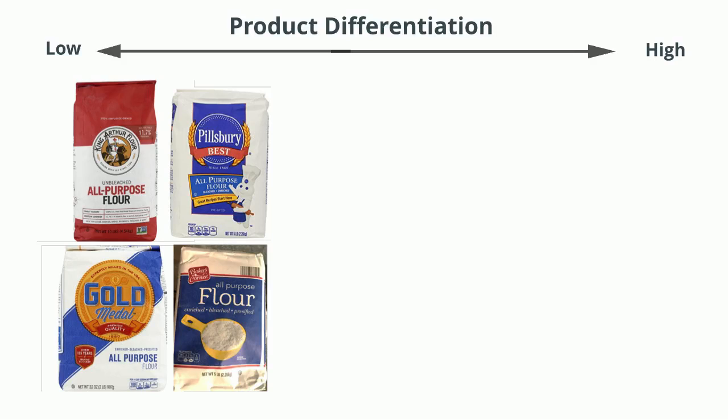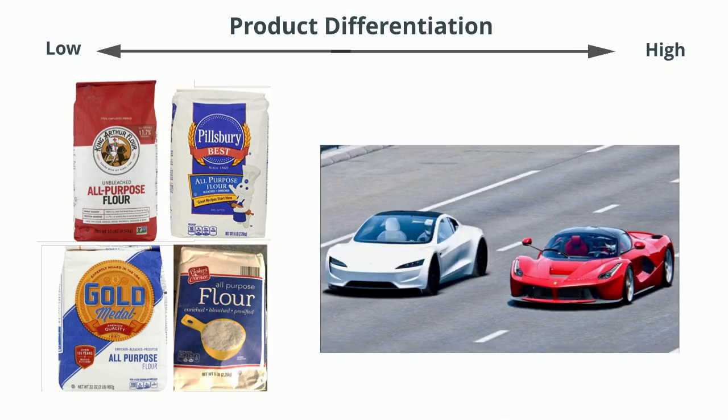By contrast, when you have a market with high product differentiation, such as the market for sports cars, customers are likely to have a very strong preference for one product over the other. This means the products aren't competing directly on price, and they can sustain higher margins.